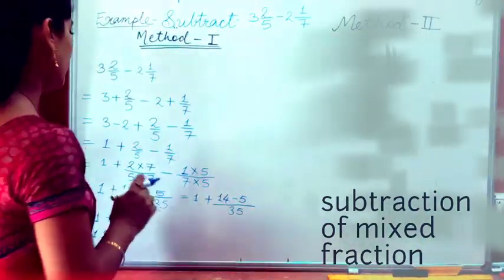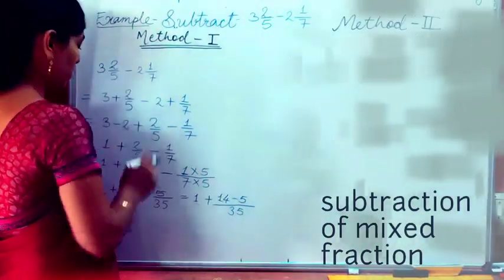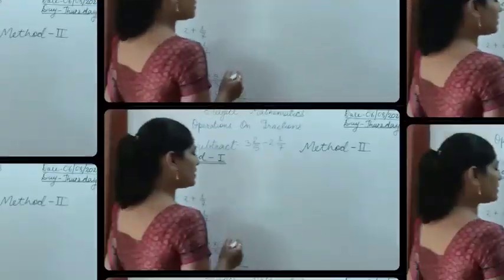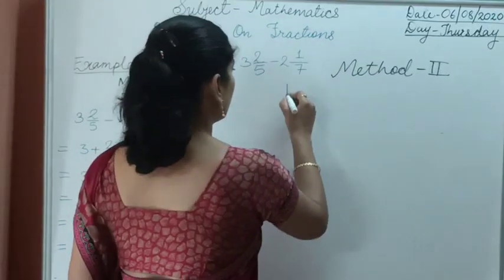We can directly write the answer as 1⁹/₃₅. The answer to the subtraction by method number 1 is 1⁹/₃₅.